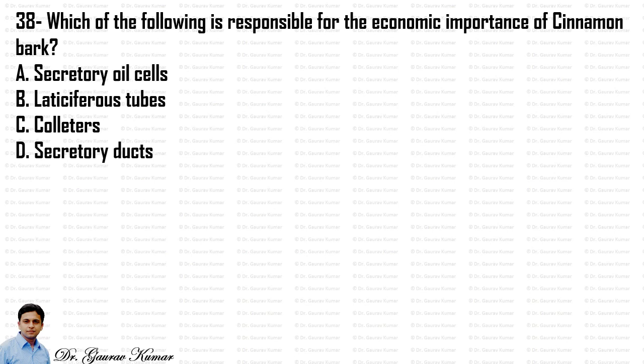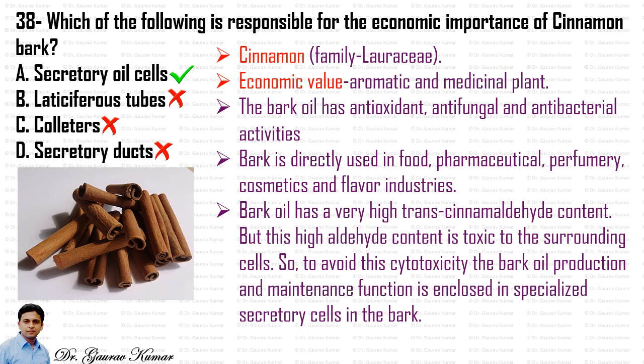Which of the following is responsible for the economic importance of cinnamon bark? The answer is secretory oil cells. Cinnamon belongs to the family Lauraceae. Its economic value is as an aromatic and medicinal plant. The bark oil has antioxidant, antifungal, and antibacterial activities, and the bark is directly used in food, pharmaceutical, perfumery, cosmetics, and flavor industries.